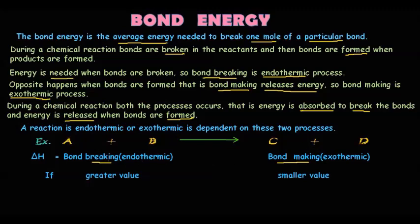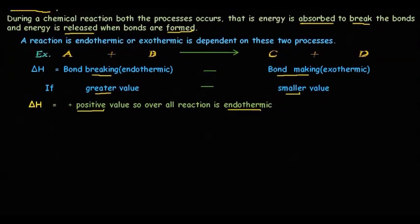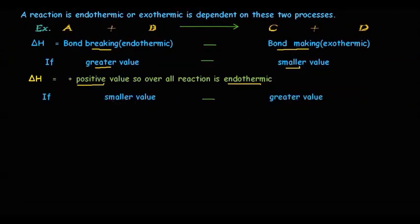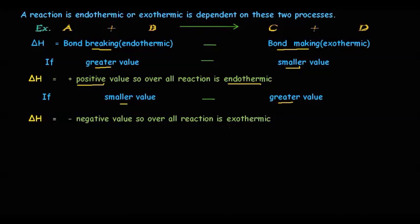If the bond-breaking energy value is greater and the bond-making value is smaller, subtracting the smaller exothermic value from the greater endothermic value gives a positive ΔH — so an endothermic reaction always has a positive ΔH value. If the opposite occurs — bond making has a greater value and bond breaking a smaller one — ΔH is negative, so an exothermic reaction always has a negative ΔH value.